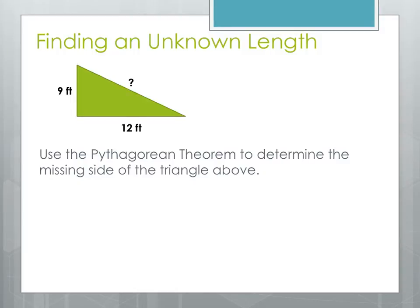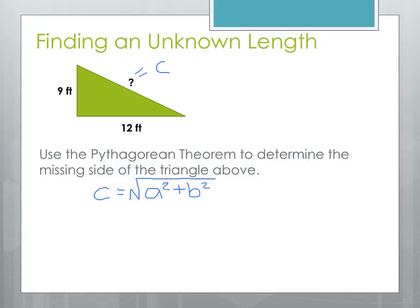Now let's use the Pythagorean Theorem to find the unknown length of a right triangle. In this triangle, the unknown side is the one opposite the 90 degree angle — the hypotenuse — so we can call that C. We're going to use C equals the square root of A squared plus B squared, since we're finding the hypotenuse. We'll plug in our numbers for A and B, the legs of the triangle. It doesn't matter which we choose for A and B; we'll still get the same answer. So let's plug in 9 for A and 12 for B.